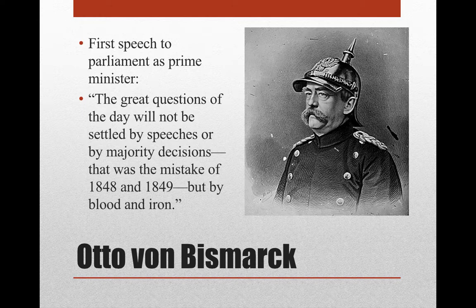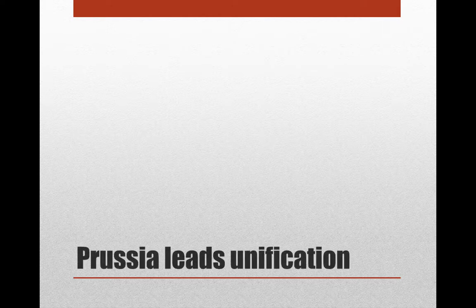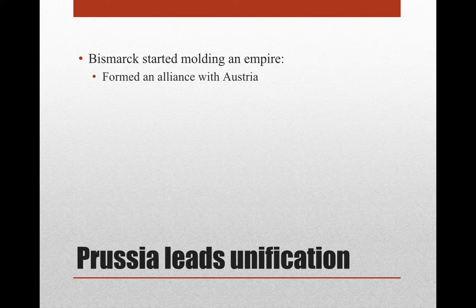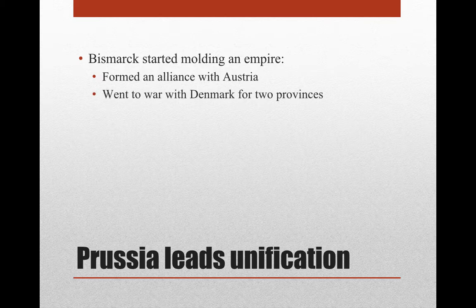What do you think he means by blood and iron? Most historians believe he was putting it out there that he's going to use war to achieve his ends — the blood of soldiers and iron, the machinery of weapons. So he promptly starts to mold an empire. First he forms an alliance with Austria. He's a master of realpolitik, so he's going to work with Austria at first and then against Austria later.